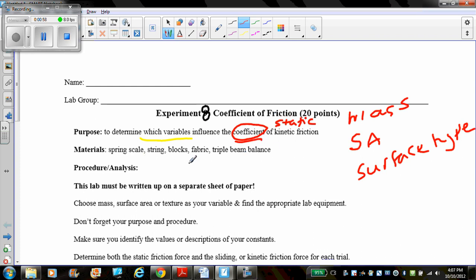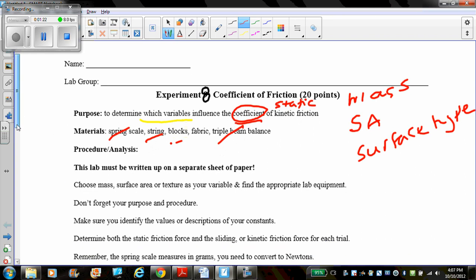Materials. You will need to adjust these in your lab write-up depending on exactly what you used. We actually used force probes instead of spring scales, string, blocks. Some of you used fabric in different surface types. We also used electronic balances instead of triple beam balances. So please update your materials list accordingly.